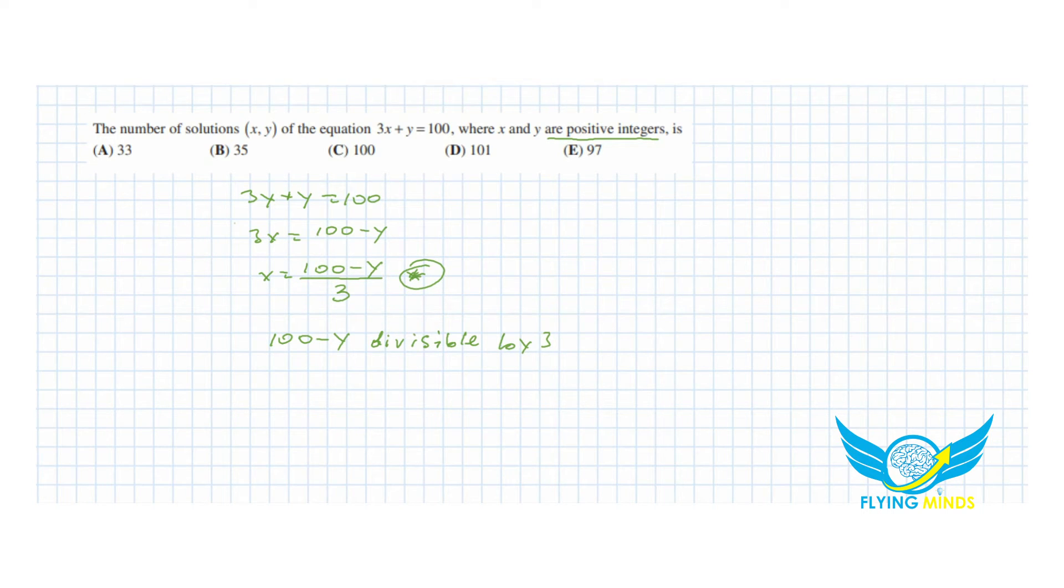So it means that y can take values of 1, because 100 minus y equals 99, then 4, 7, 10, 13, and so on, till we get the last value which will be 97.